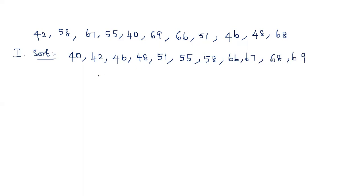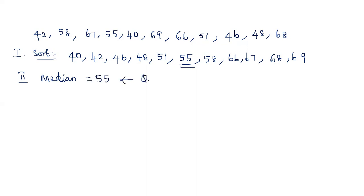The second step is to find the median of this data set. We have 11 samples, which is an odd number. So the median is exactly the middle value, which is 55. This is denoted as Q2.